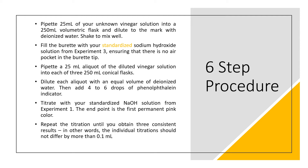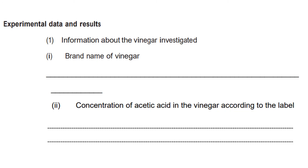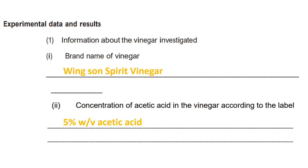After you finish these 6 steps in the lab, your lab report should look like this. They can ask you for the brand name of the vinegar, which can be any brand name. In this case, I have used Vinson Spirit Vinegar. The concentration of acetic acid in the vinegar is shown according to the label — for example, 5% weight by volume acetic acid.